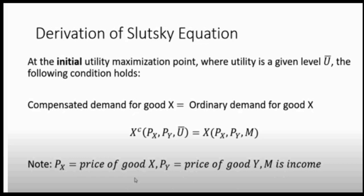Let us derive the Slutsky equation. The derivation starts from a statement that at the initial utility maximization point, where utility is at a given level u-bar, the compensated demand function for a good equals the ordinary demand function for that good. So the compensated demand function for good x is equal to the ordinary demand function for good x.